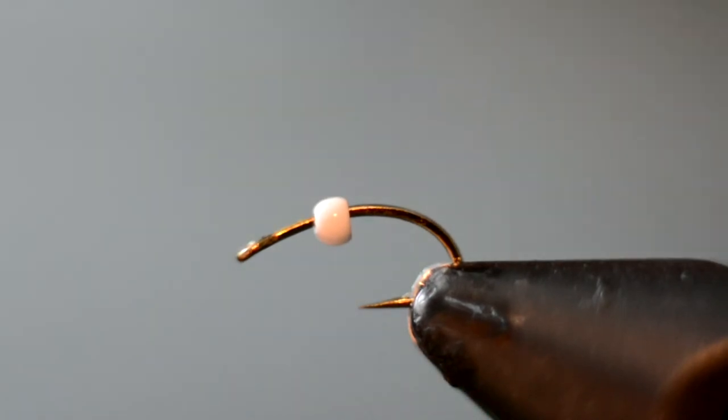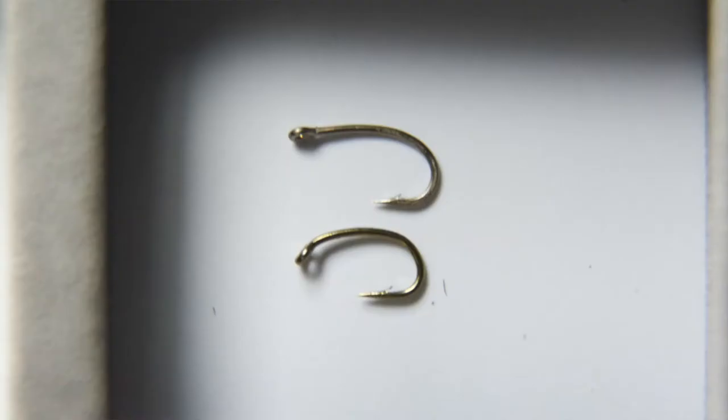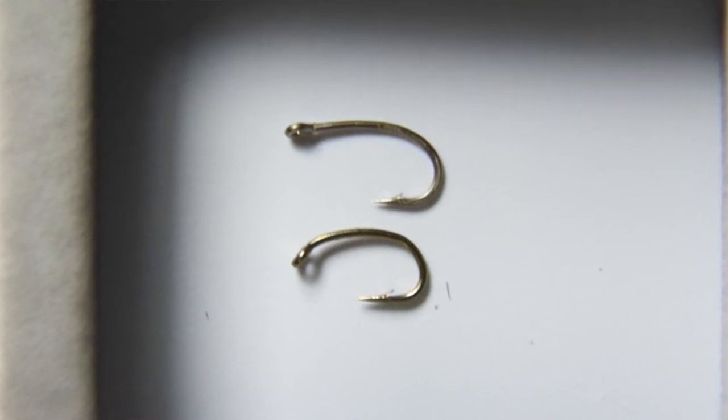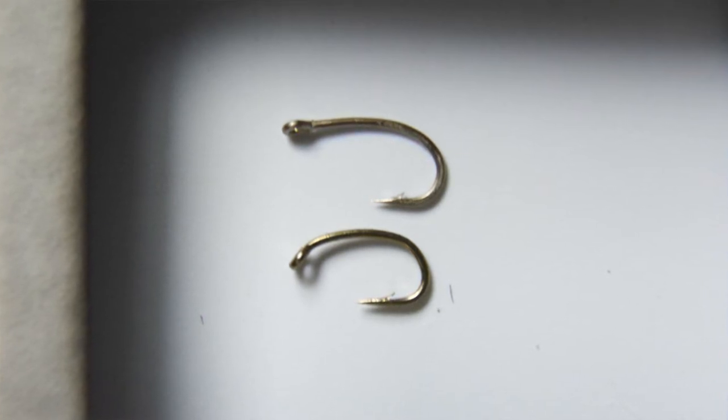I'm going to put a picture up right now of what I'm talking about. As you can see, one hook has a downturned eye and it's like your normal traditional scud hook, and the other hook has a straight eye which is what I'm tying on tonight.